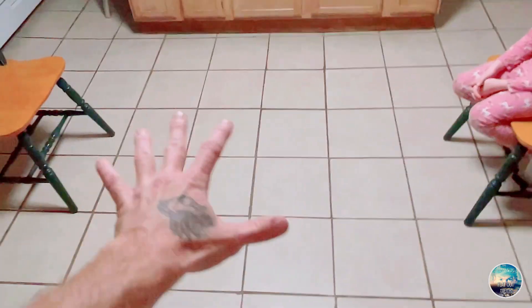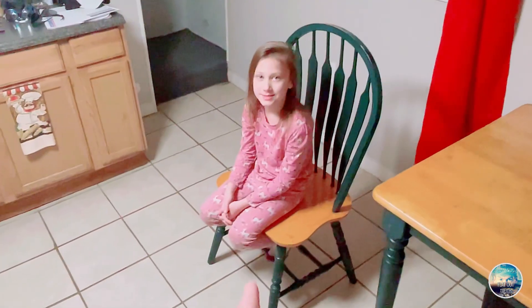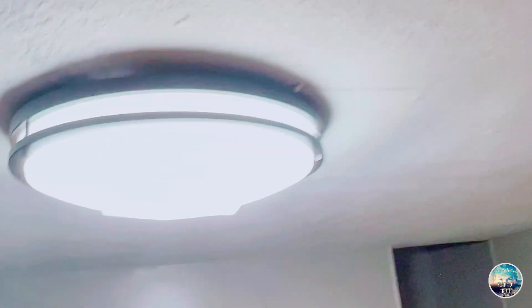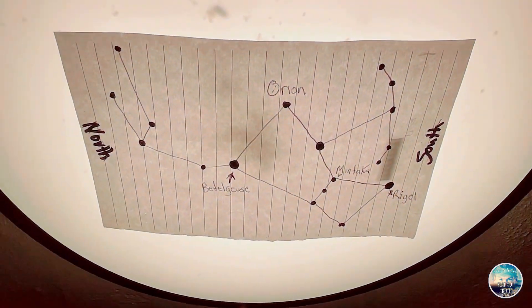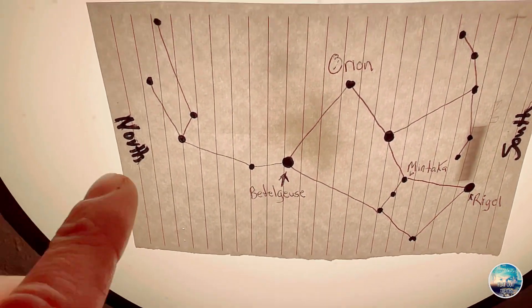We're going to use the center of the kitchen floor of the cabin here. As you can see, it's not a sphere — it's a flat tile floor, and it's going to represent our flat earth. Over here this chair is the northern hemisphere, and over here this chair is the southern hemisphere. Up here at this light on the ceiling I have put the belt of Orion, with north facing one chair and south facing the other.